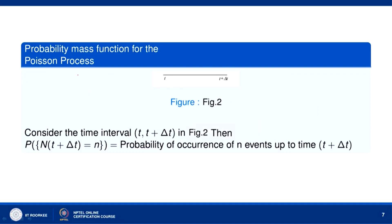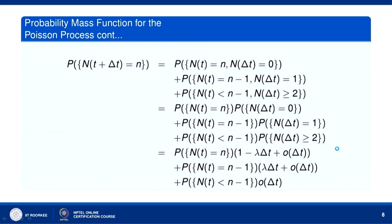Now let us find the probability mass function for the Poisson process. The figure shows time t and time t + Δt. Consider the time interval t to t + Δt. Then P(N(t + Δt) = n) means over the time interval 0 to t + Δt, the number of occurrences equals n. P(N(t + Δt) = n) can be written in terms of P(N(t) = n) and P(N(Δt) = 0).